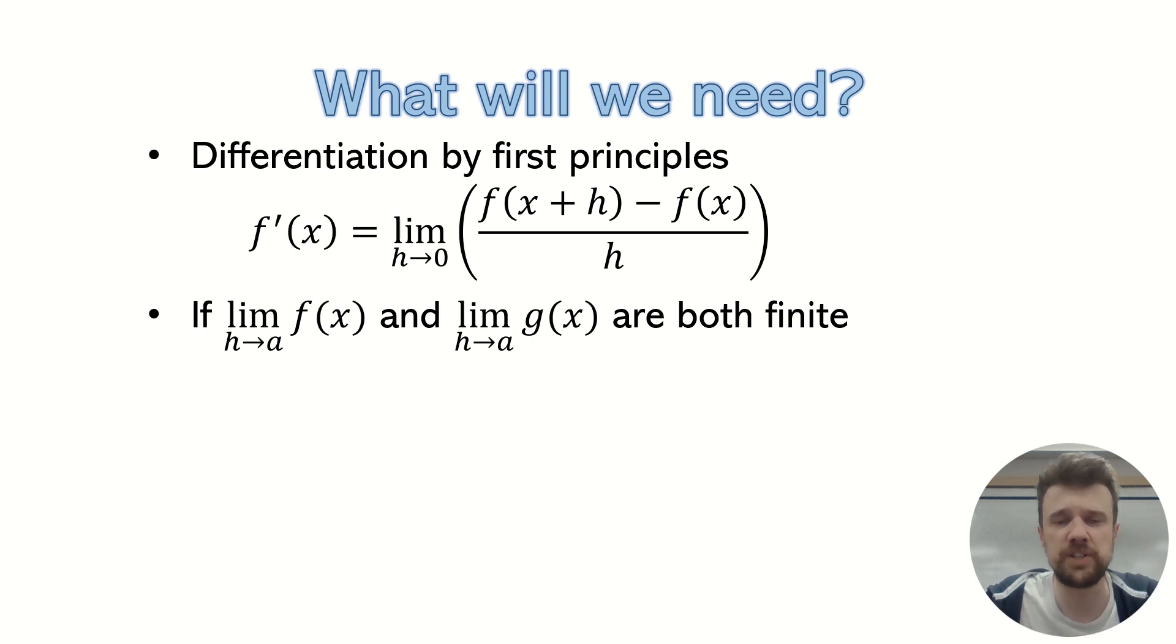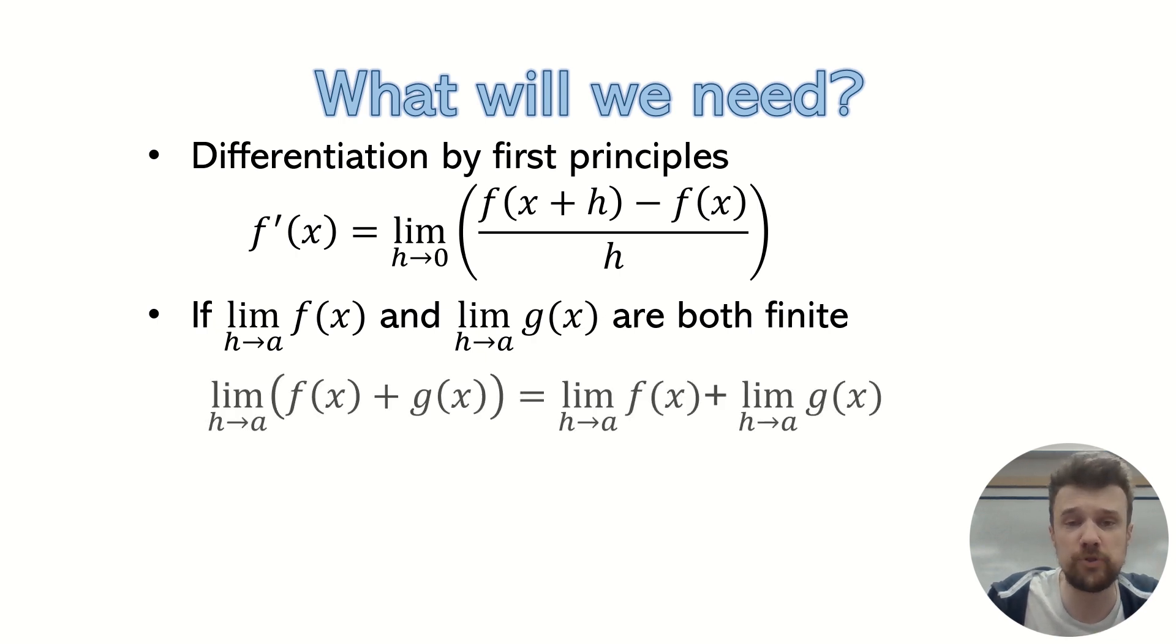So, the first of those properties is, if we've got the sum of two functions, and then we're doing the limit of them, then that's the same as doing the limit of the individual functions, and then doing the adding later. Cool, pretty neat.